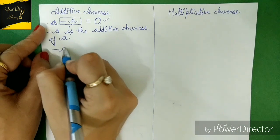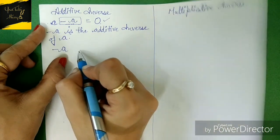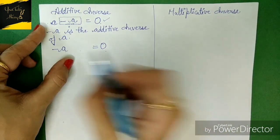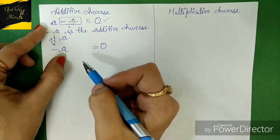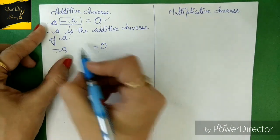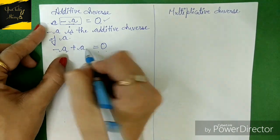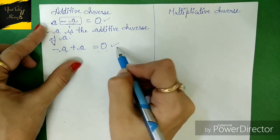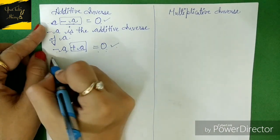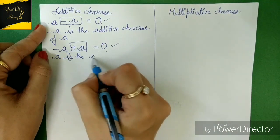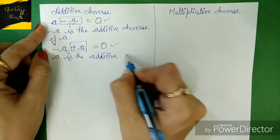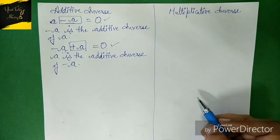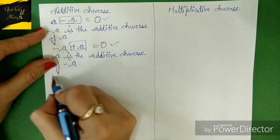Now suppose I'm taking another example with a minus sign — I'm taking '-a'. What should be added or subtracted from this to get a result of zero? This digit already contains a minus sign, so I need to add one digit similar to it. If we add '+a', both get cancelled and we get zero. It means 'a' is the additive inverse of '-a'.